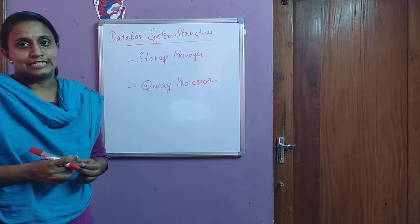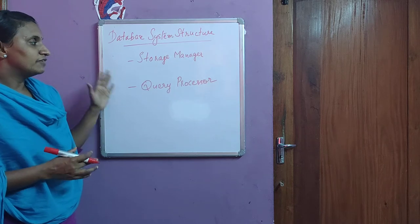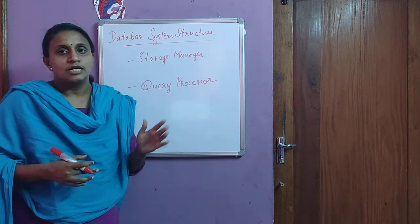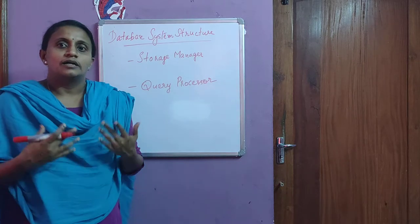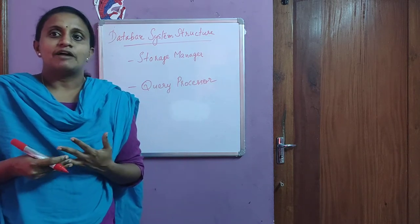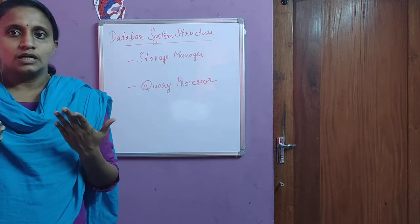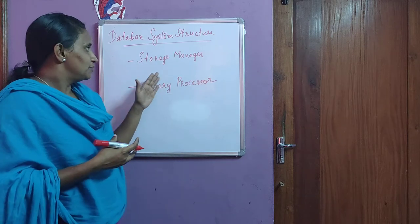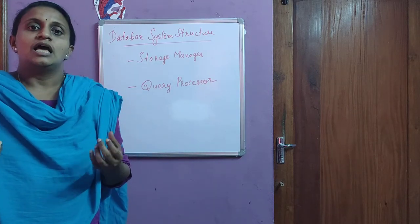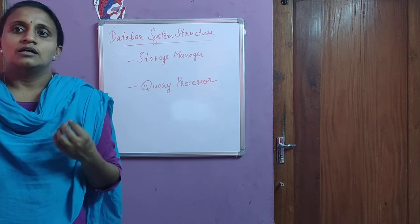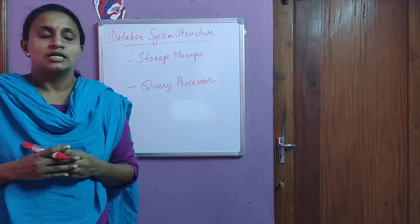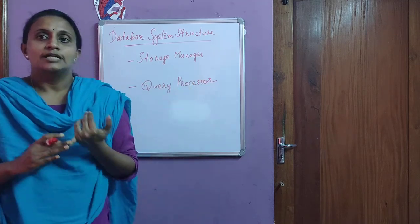Next is the database system structure. There are mainly two components: the storage manager and the query processor. The storage manager is responsible for storing, retrieving, and updating data in the database. It includes a transaction manager and a file manager, which manage the storage of files, allocation of disk space, and fetching data between main memory and secondary memory.